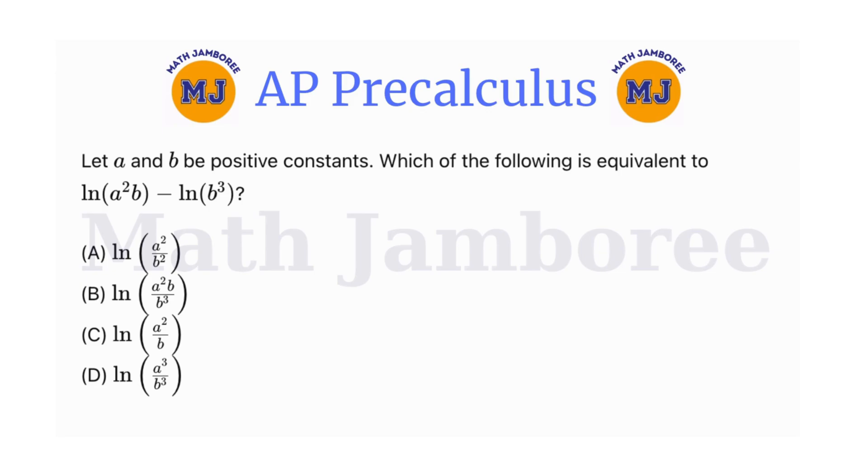Let's dive into it. Let a and b be positive constants. Which of the following is equal to natural logarithm of a squared b minus the natural logarithm of b cubed?